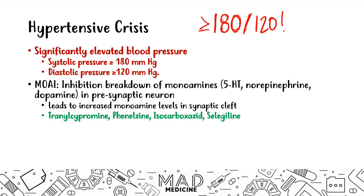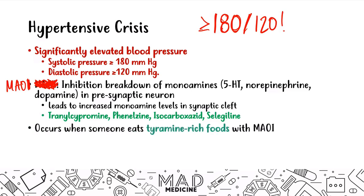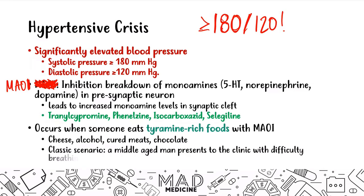Some MAOI drugs you need to know: tranylcypromine, phenelzine, isocarboxazid, and selegiline. Patients taking MAOIs who eat tyramine-rich foods such as cheeses, alcohol, cured meats, and chocolate will have increased levels of tyramine — a naturally occurring monoamine — causing systemic effects. The classic scenario is a middle-aged patient who eats these foods and presents with difficulty breathing and very high blood pressure.